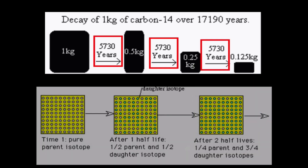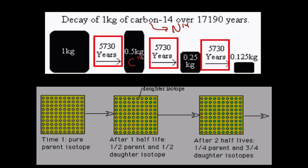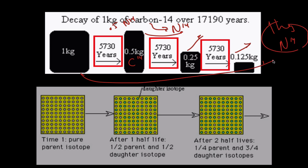This diagram shows carbon-14 breaking down. You have one kilogram; after one half-life it has 0.5 kilograms, then that breaks down to 0.25. It's not like the material disappears — remember, carbon-14 breaks down into nitrogen-14. So here we have 0.5 kilograms of carbon-14 and 0.5 of nitrogen-14. Carbon-14 breaks down until ultimately you'll end up with that same one kilogram, just as nitrogen-14 at the end.